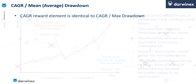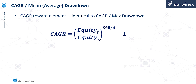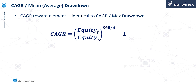Let's take a closer look at this. The compound annual growth rate — the reward element — is absolutely identical to the previous metric. But the bias that gets introduced when using max drawdown, due to the frequency or number of major drawdowns in the equity curve, is now eliminated when we start to use the mean or average drawdown instead. That's the primary reason why this is a much more effective metric to use.